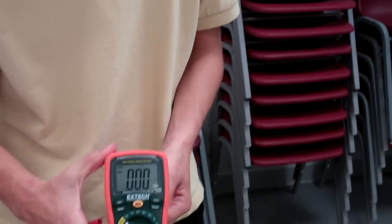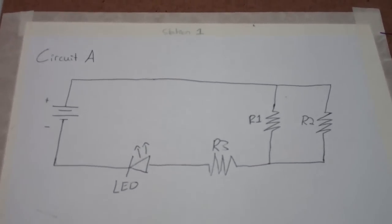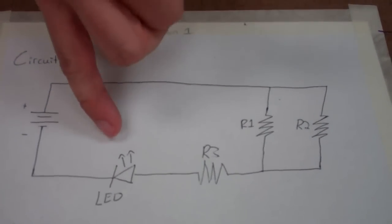Now what circuit are we going to look at? We're looking at circuit A on our board, which is our setup right here. Notice that we have our battery, our three resistors, and our LED.